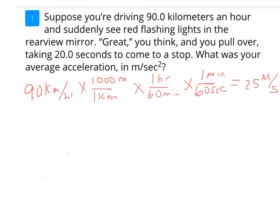Now here we have a problem: suppose you're driving 90 kilometers per hour and you see red lights flashing and have to pull over, taking 20 seconds to come to a stop. What was your average acceleration in meters per second squared? The first step is to convert 90 kilometers per hour to meters per second. Using unit conversions — 1 kilometer equals 1,000 meters, and 1 hour equals 60 minutes equals 3,600 seconds — we arrive at 25 meters per second.